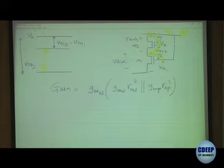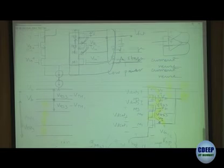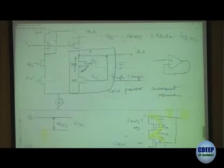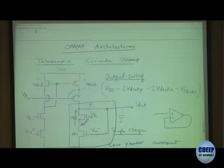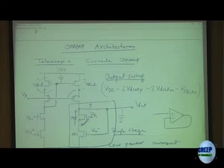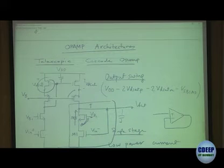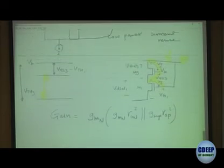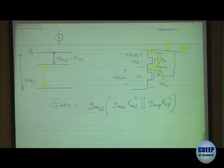The gain of the telescopic cascode op-amp: the driving-point GM is GM_N, and the gain is GM_N times (GM_N*RO_N^2 in parallel with GM_P*RO_P^2). You also have to worry about the mirror pole, which involves two CGS capacitances and the GM of the mirror device.